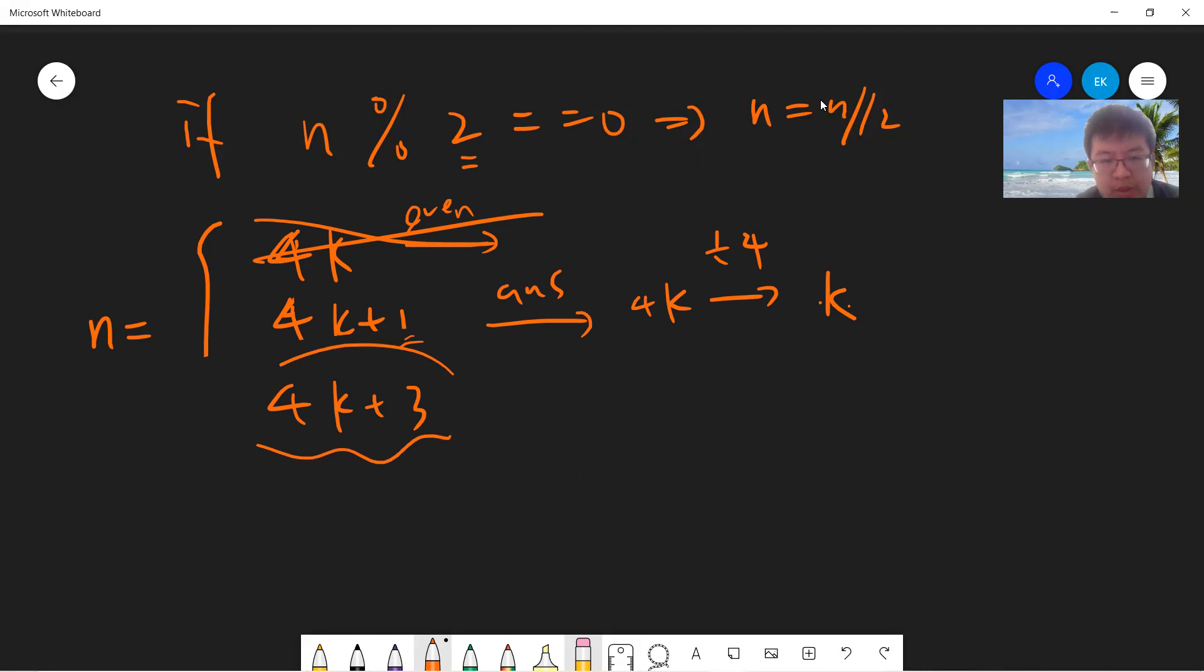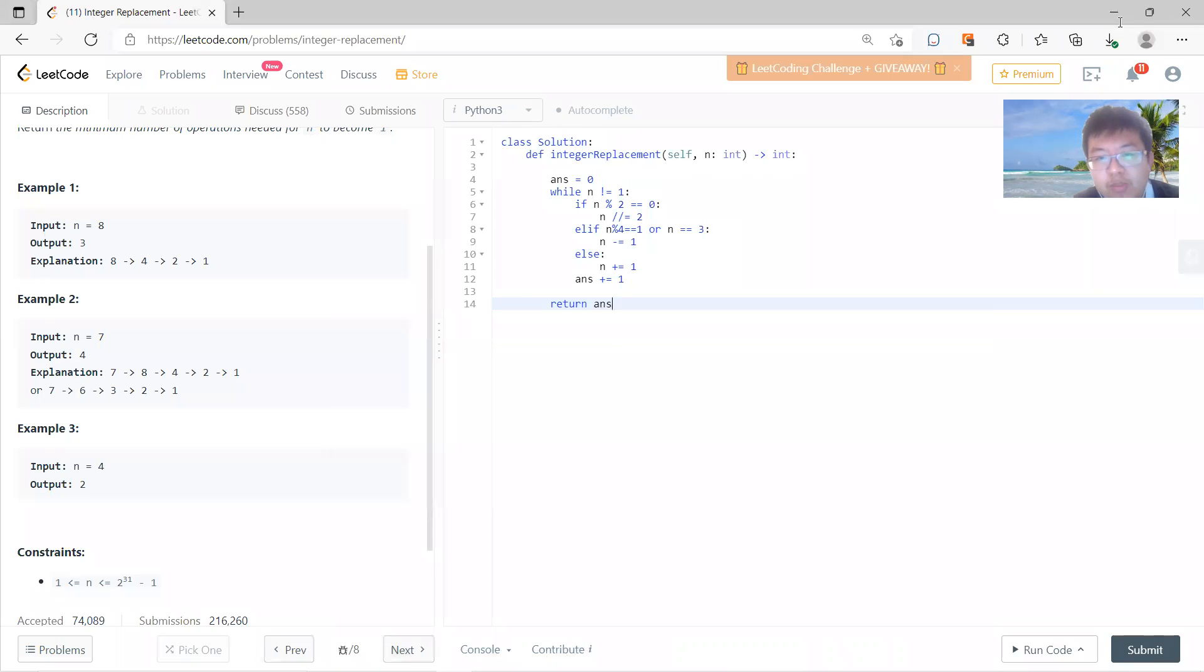But how about this? Why should this add 1, not minus 1, because if you add 1, then become even, if you minus 1, still become even. So the only non-trivial part in this model is that why 4k plus 3 should add 1.